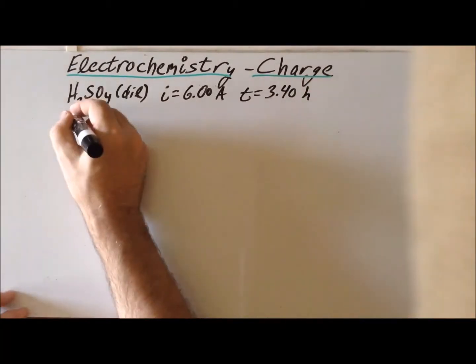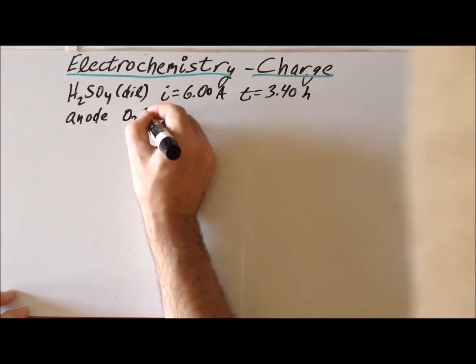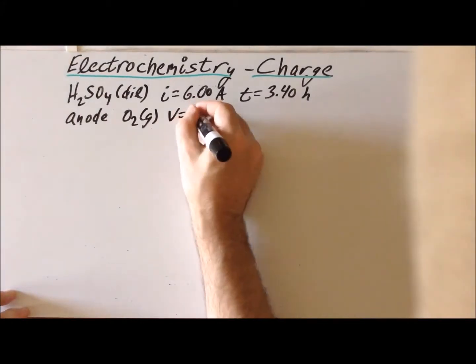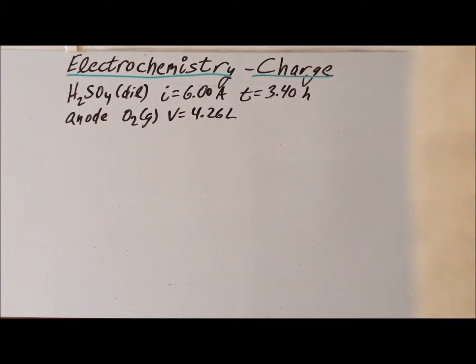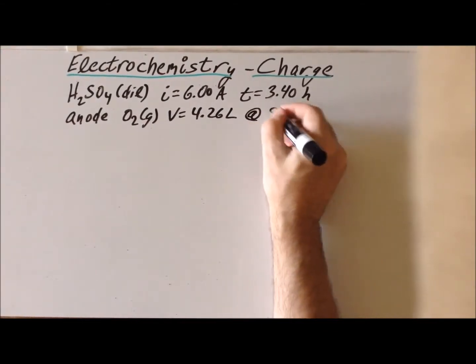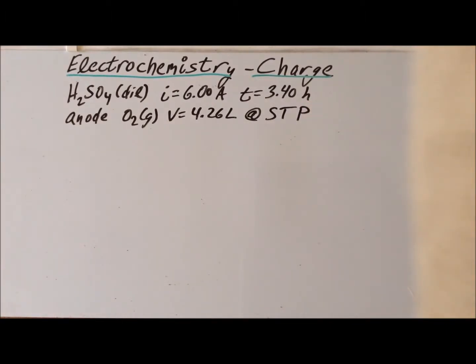At the anode in this electrolysis experiment, we generate O2 gas and we generate a volume of 4.26 liters. As far as the temperature and pressure conditions, this is under standard temperature and pressure conditions, STP, which corresponds to a temperature of zero degrees centigrade and a pressure of one atmosphere.